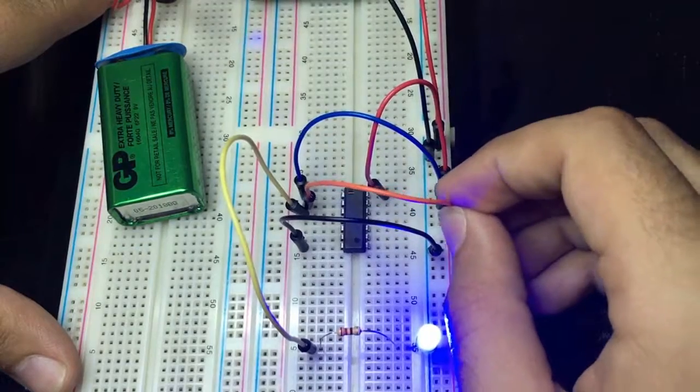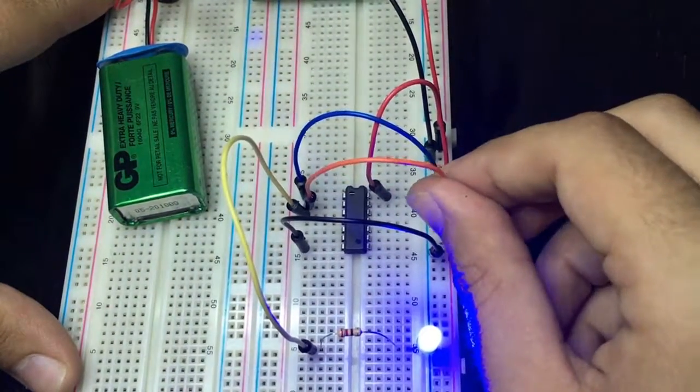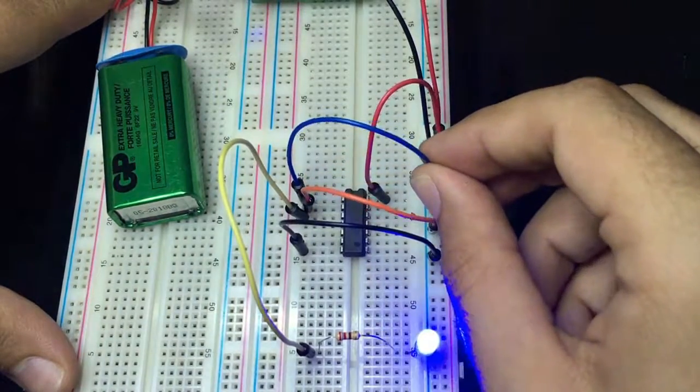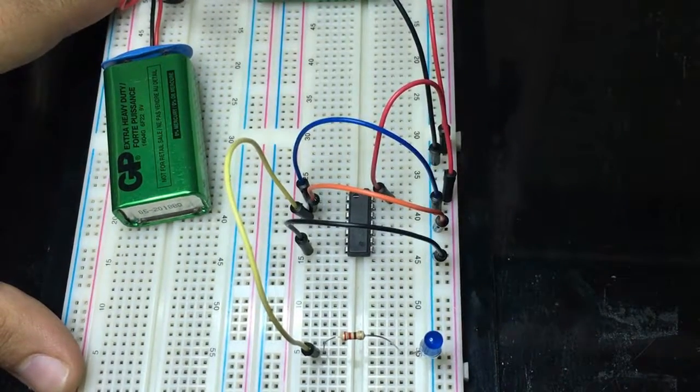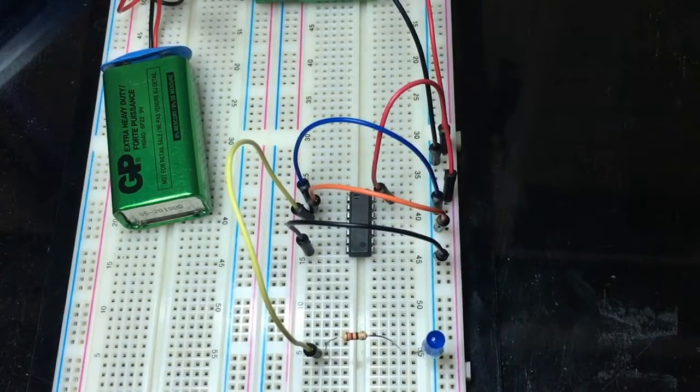If both of them are high, the output is high also. The only case that the output is low is when both of the inputs are low. So that's it guys for the OR gate. Thanks a lot for watching.